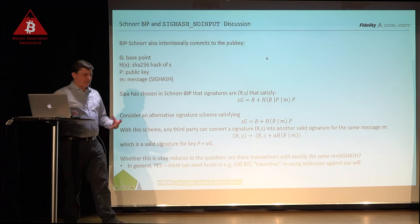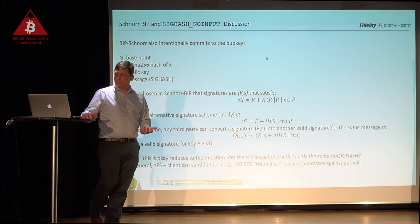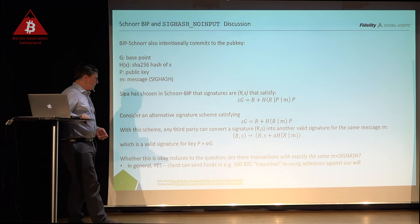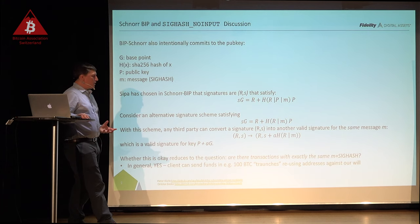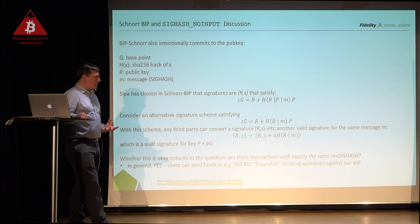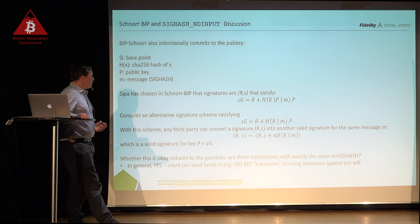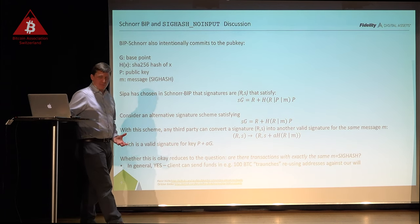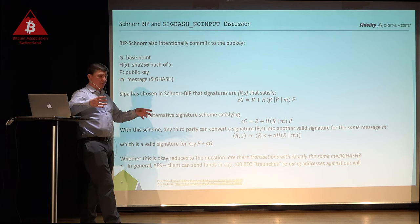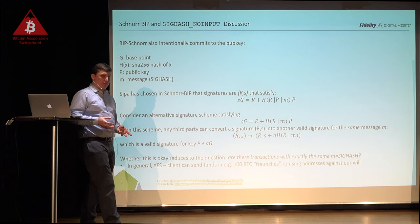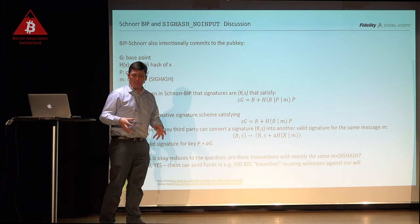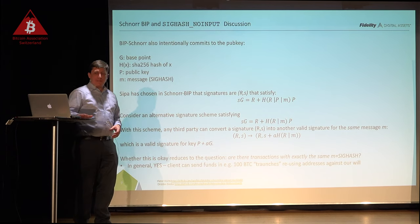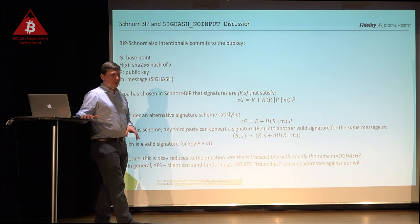One of the other things happening in the Bitcoin community is the Schnorr BIP being proposed. The Schnorr signature algorithm is an alternative to ECDSA — it has a lot of advantages. People like Schnorr for mathematical reasons: it has security proofs, and you can take multiple Schnorr signatures and add them together for a still-valid signature — batch validation. You can take a lot of data and validate it all at once very quickly. It's expected that Schnorr will be part of the changes coming to Bitcoin probably this summer with a new soft fork.